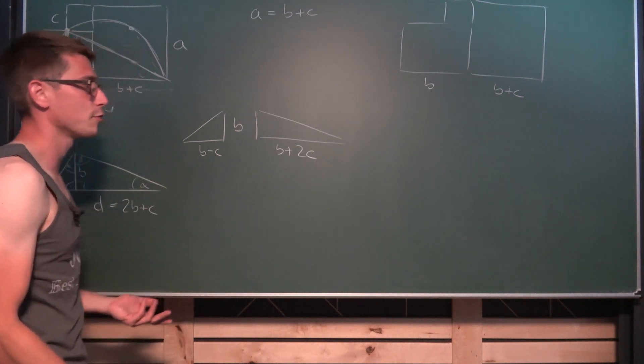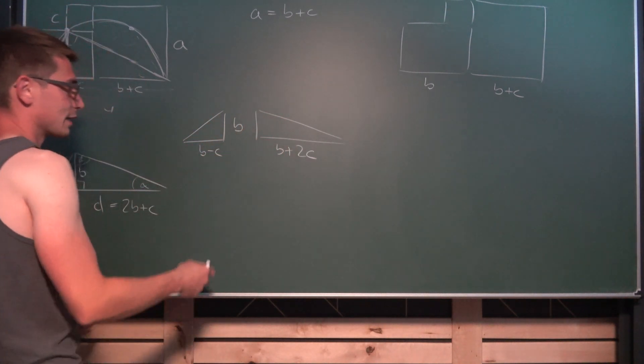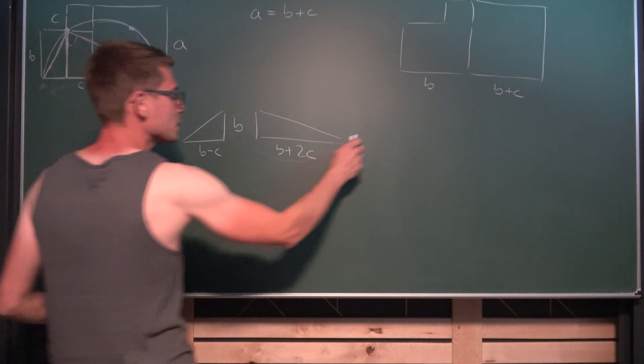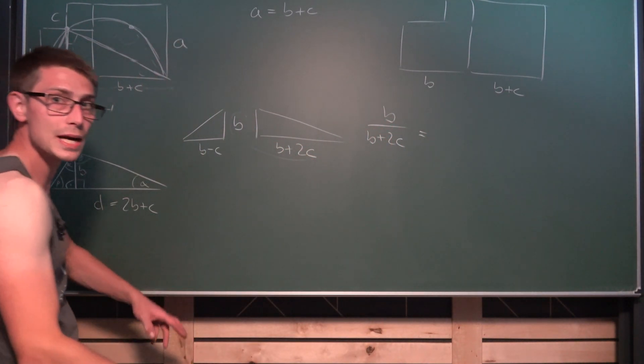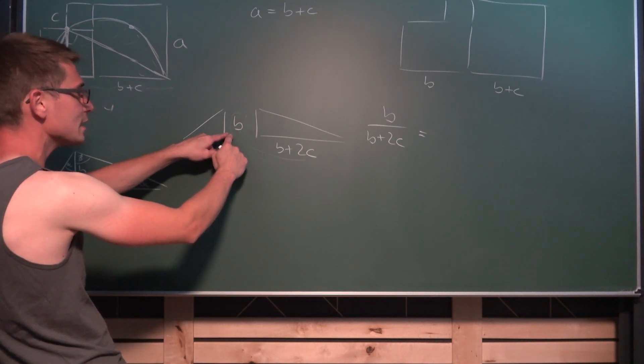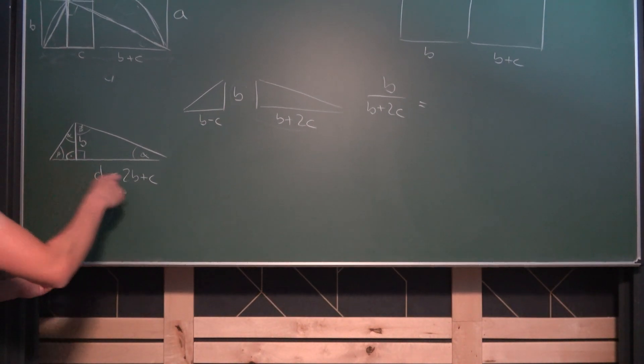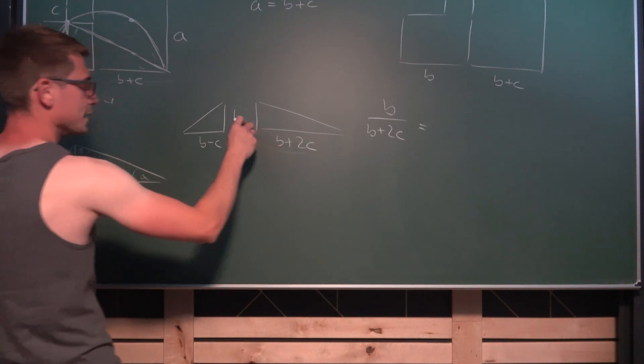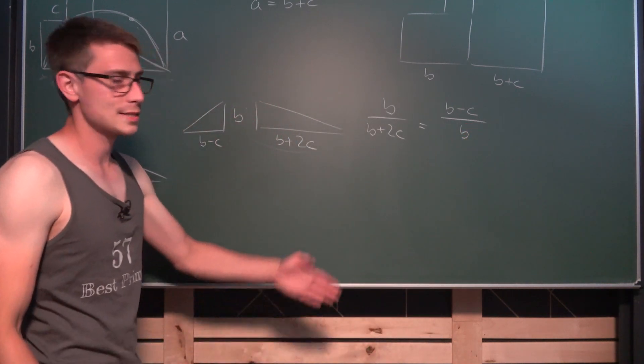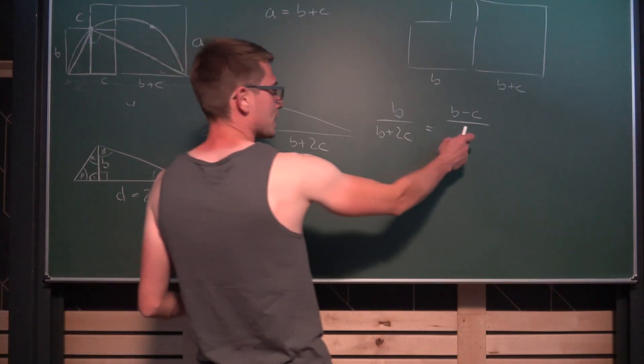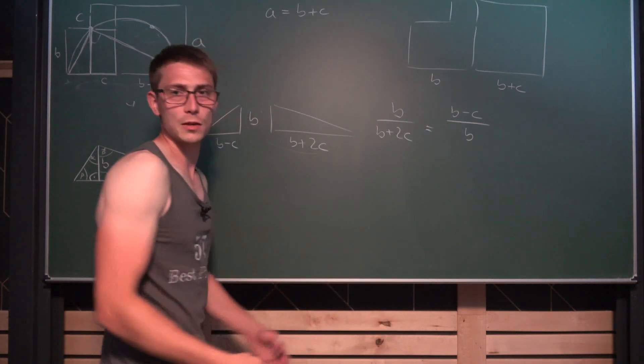Now we can start comparing the shorter side length in the right triangles with the longer side length. So if we have this connection B divided by B plus 2C, this ratio is going to be the same as shorter divided by longer. So B minus C divided by B. And now we can start solving this equation a little bit. Multiplying both sides by B, it's not equal to zero, it's a positive side length, and multiplying both sides by this part, both are positive, they can cancel out.